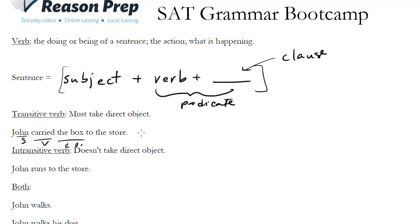So John carried, it's a transitive verb, must take an object. John hit, well John hit what, right? You need some kind of noun there, direct object to make it clear what the action is acting on.